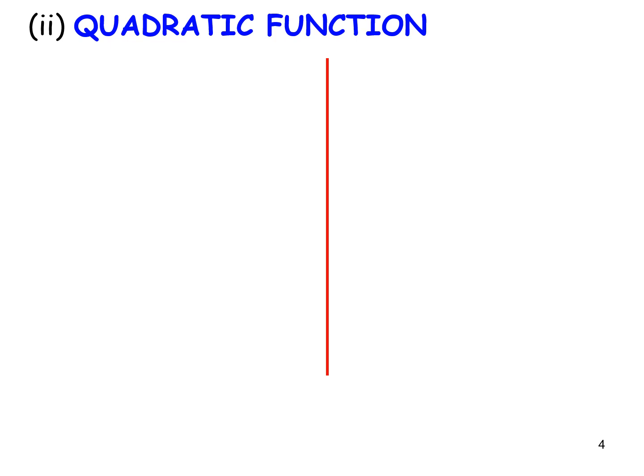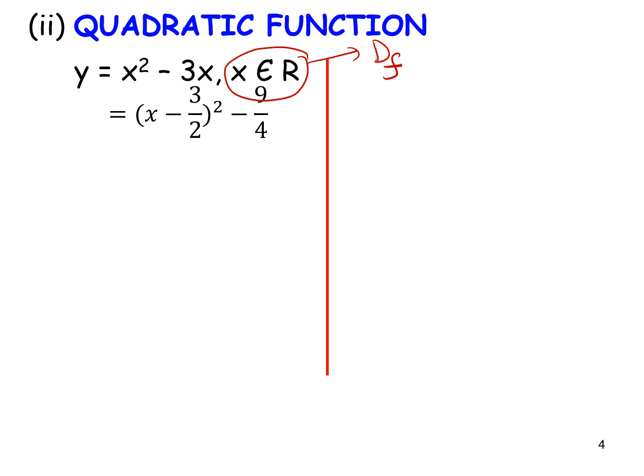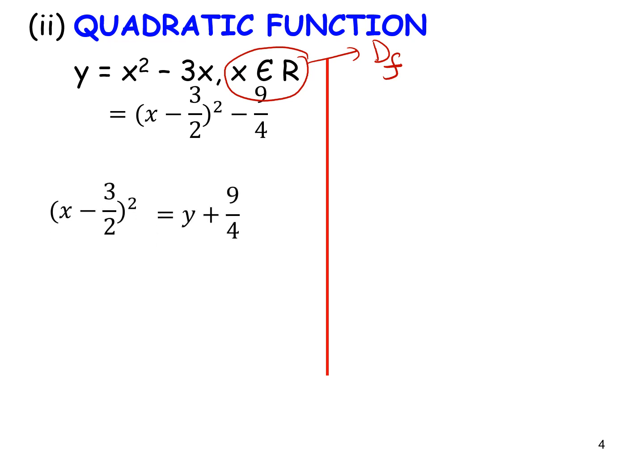For a quadratic function using the algebraic approach: let y = x² - 3x where x is real. The domain is already stated as x is real. For the algebraic approach, first convert the quadratic function into completing-the-square form, giving (x - 3/2)² - 9/4. Then rearrange to get (x - 3/2)² = y + 9/4.